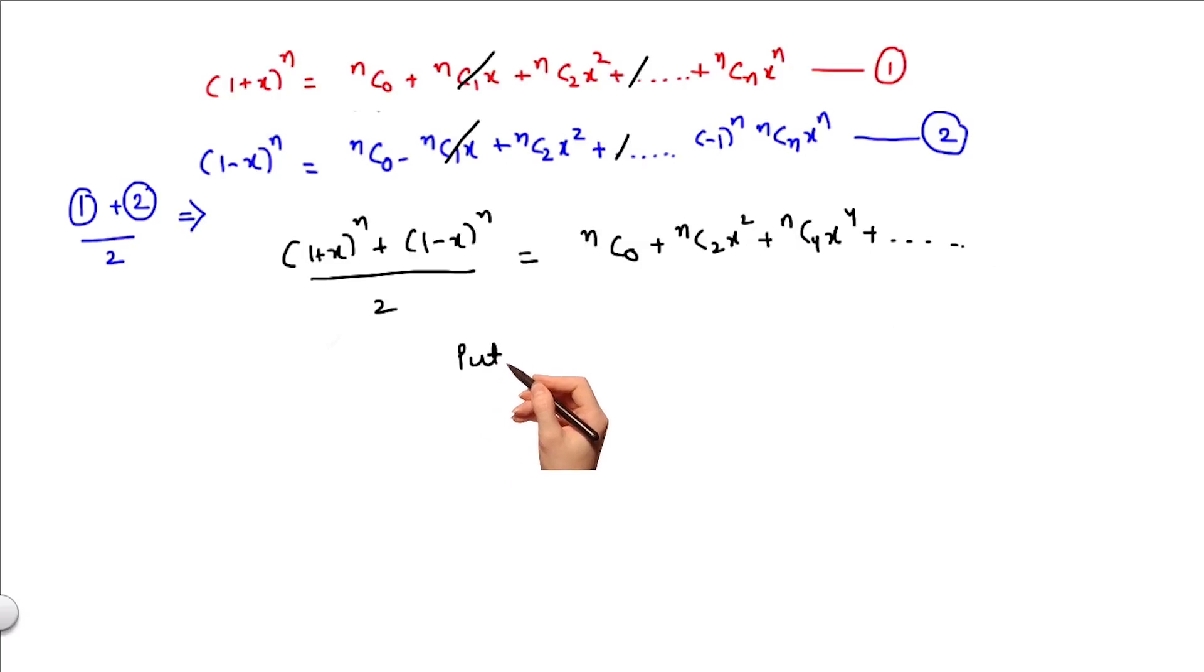Now if I put x equals 1, I get a very interesting result. It would be [2^n + 0]/2 equals nC0 + nC2 + nC4 and so on. This means that the sum of the even binomial coefficients equals 2^(n-1).